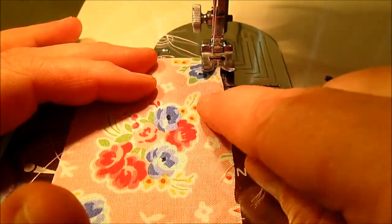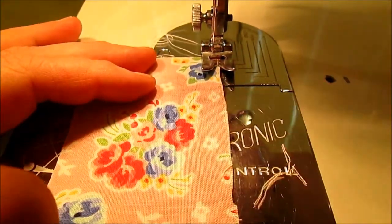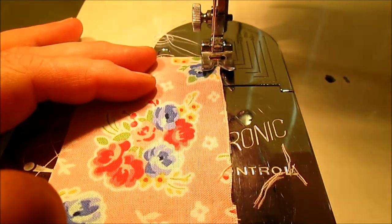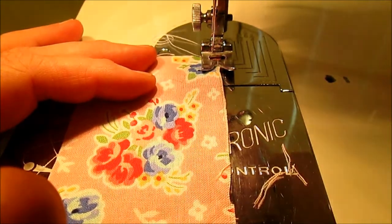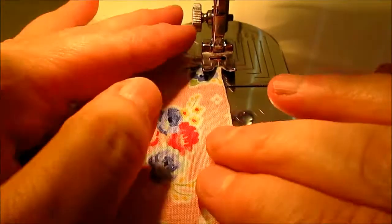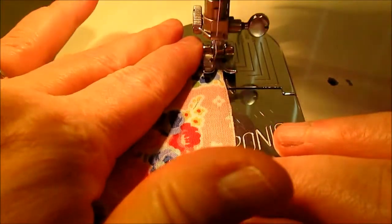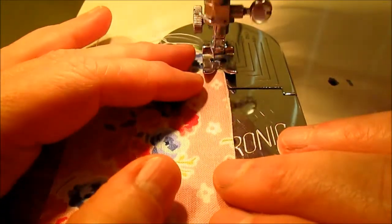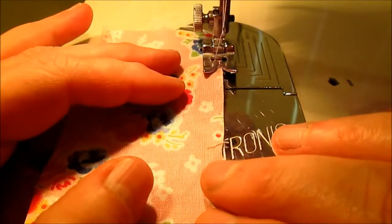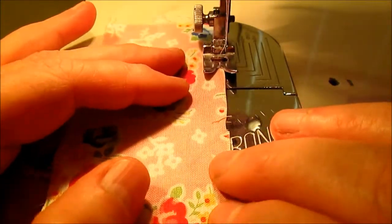It's going to go across back and forth very wide across the seam, and then I've made the stitch length about a medium stitch. So I'm going to come down. See how it's going half on and half off of my fabric?